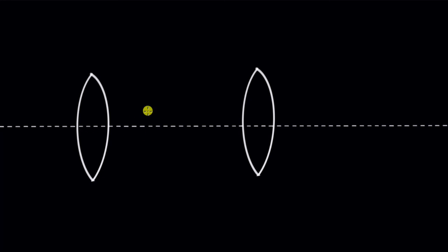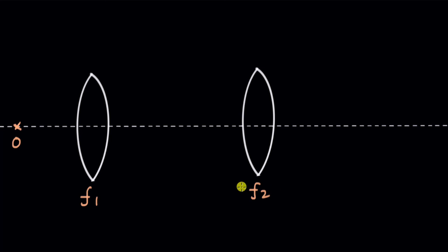Here we have two thin lenses with an object on the left. The task is to figure out the distance of the image after light rays undergo refraction from both lenses. We are provided with focal lengths F1 and F2, the distance D between the two lenses, and the object distance U1 for the first lens.